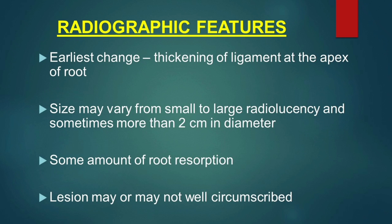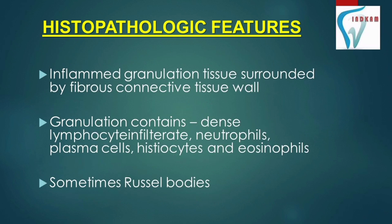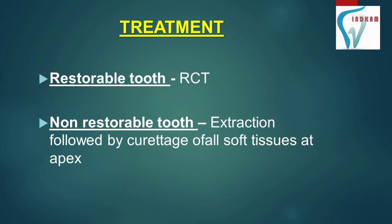The lesion may or may not be well circumscribed. Histopathologic features: inflamed granulation tissue is surrounded by a fibrous connective tissue wall. The granulation tissue contains dense lymphocyte infiltrate, neutrophils, plasma cells, histiocytes, and eosinophils. Sometimes Russell bodies are also present.